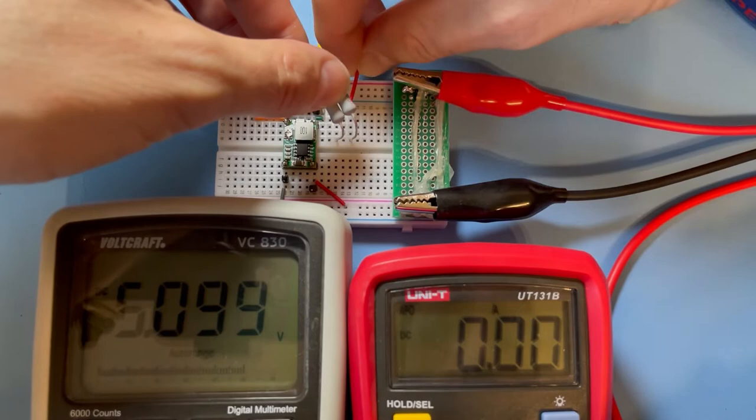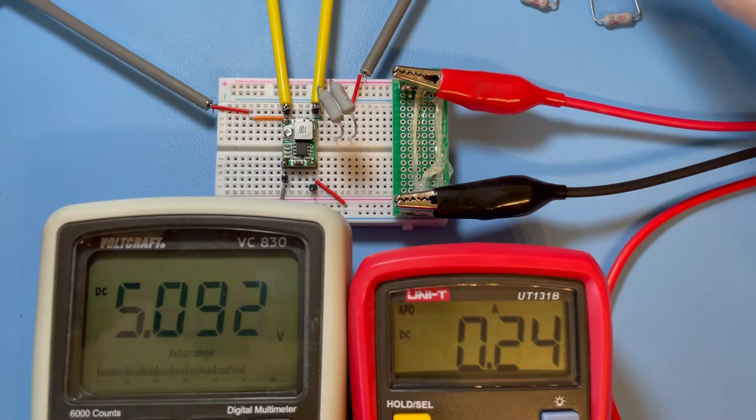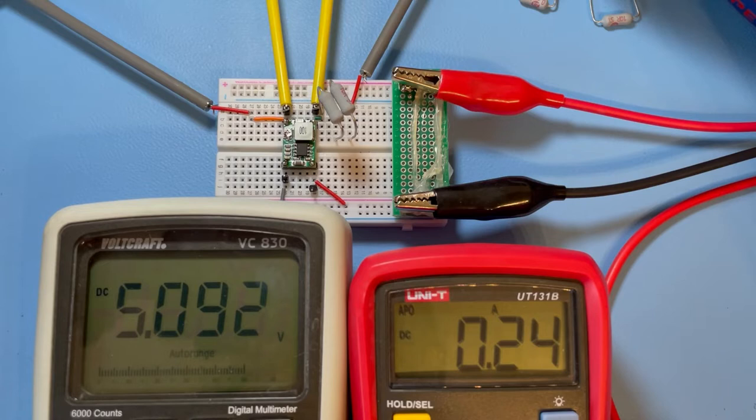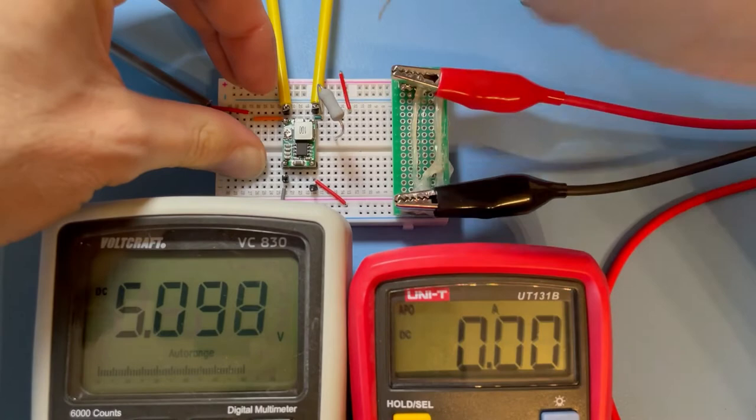Let's go to 20 ohms. 240 milliampere, still stable. It starts to go down a little bit, but we were at the start at 5.089 something, so that's not remarkable.